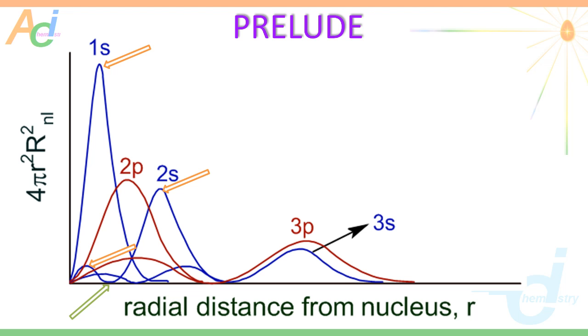And now this is the curve for the 3p orbital. It has 2 peaks and 1 radial node. It is just like the 2s orbital.